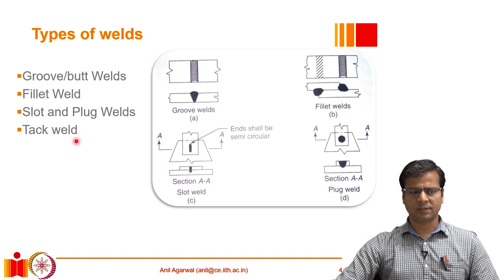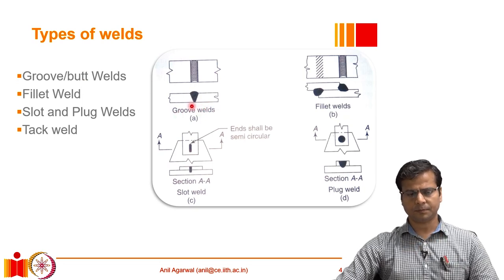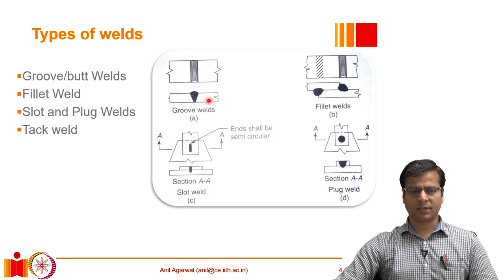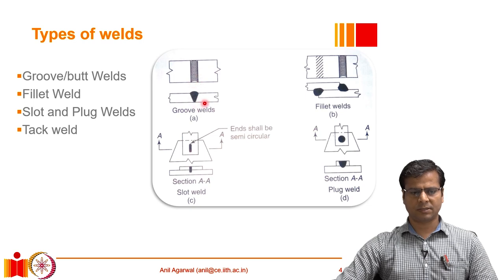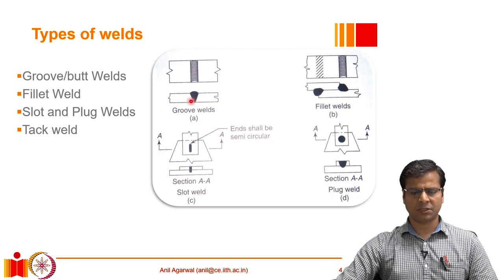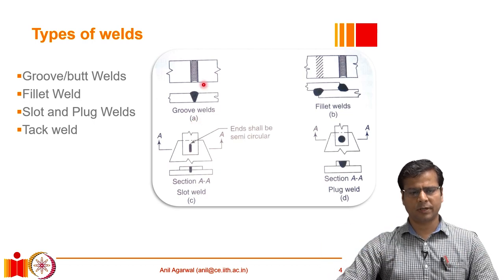In typical structural applications, welds can be classified geometrically into four categories. The first is the groove weld, also known as a butt weld. When two plates are to be joined using a groove weld, the gap between the plates is filled with weld material. It is called a groove weld because a groove is created and filled with welding material, and a butt weld because the two plates are placed butting against each other.